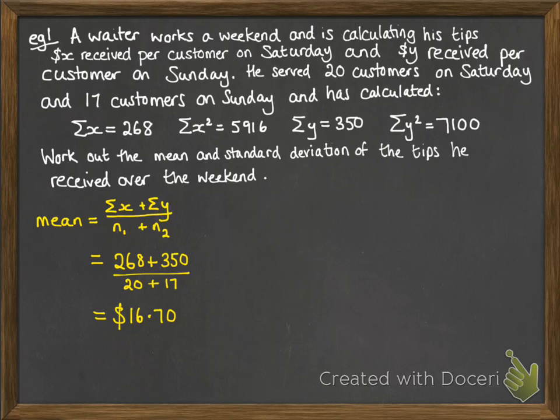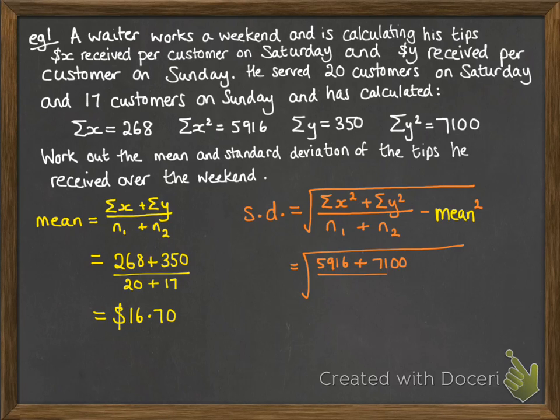And we get that average tip of $16.70 per customer over the whole of the weekend. Now for standard deviation, take our formula, put in the parts that we know about from each of those Saturday and Sunday values, combine them together, use the mean that we just worked out, and get the standard deviation of $8.54.